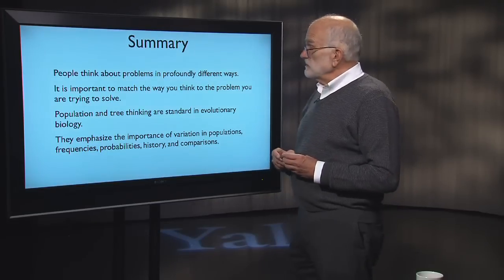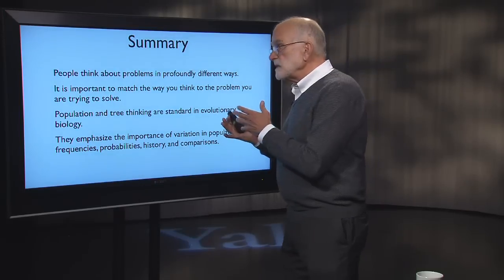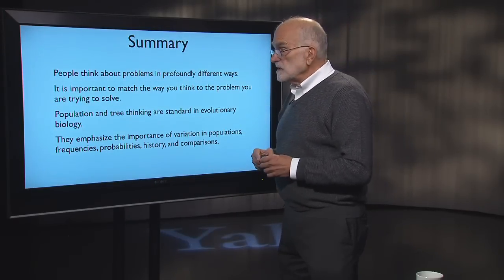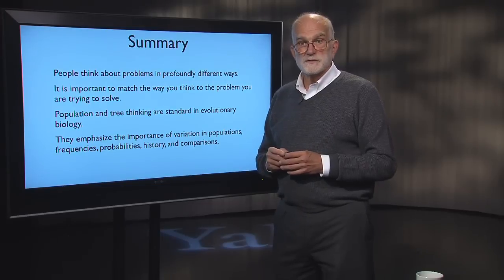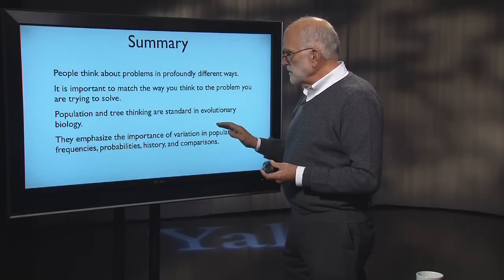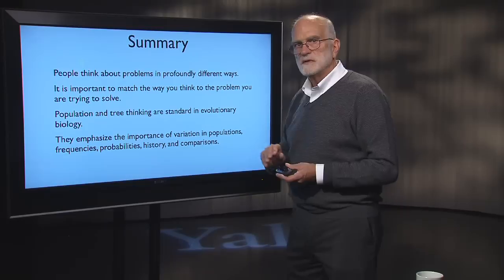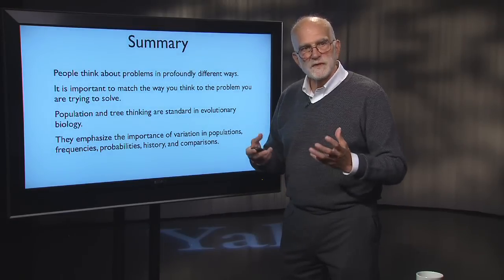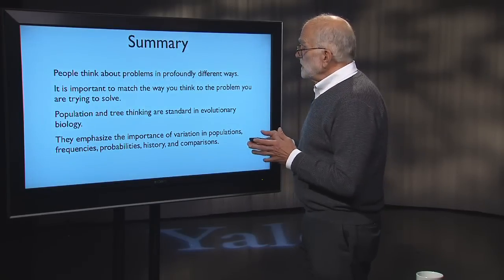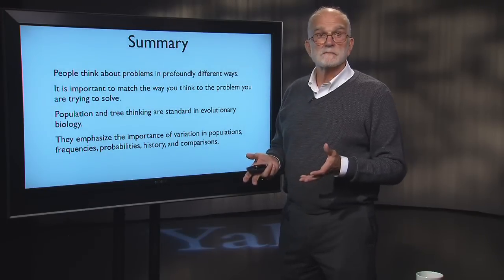To summarize: people think about things in very different ways, and you need to match the way you think to the problem you're trying to solve. Population and tree thinking are standard in evolutionary biology. They are ways of looking at the world that emphasize the importance of variation, frequency, probability, history, and comparison. If you can become fluent in those modes of thought, you will gain quite a bit of intellectual power in trying to understand why things are the way they are.